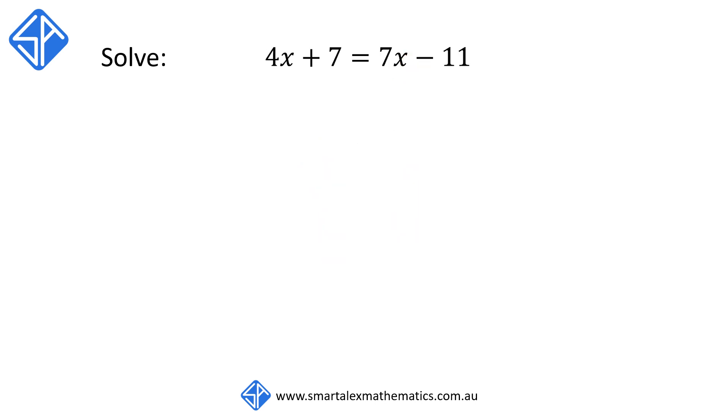Here's another example: 4x plus 7 is equal to 7x minus 11. Again we've got the pronumeral x on the left and the right hand side. We're going to subtract 7x from both the left and the right hand side. This will eliminate the 7x from the right hand side.